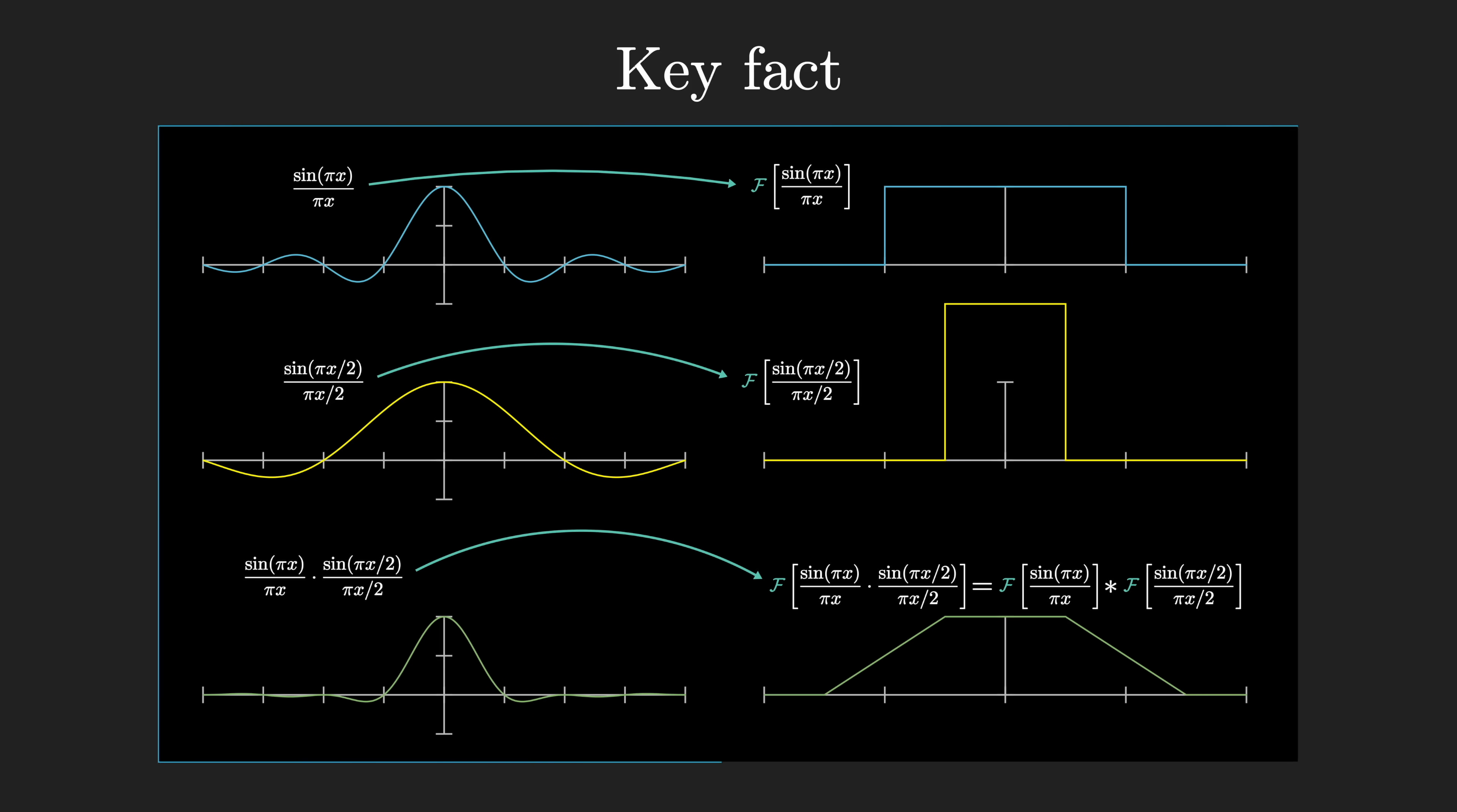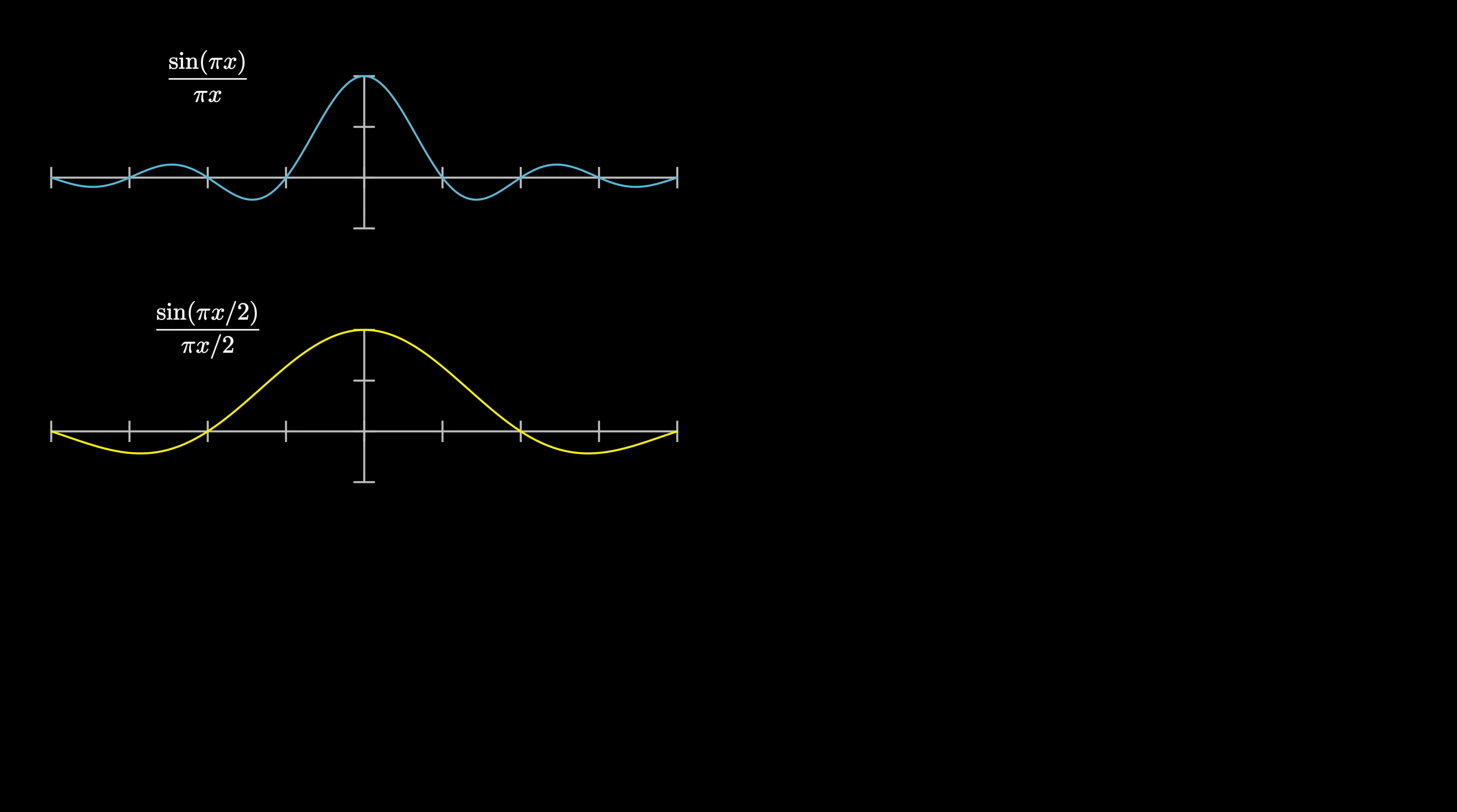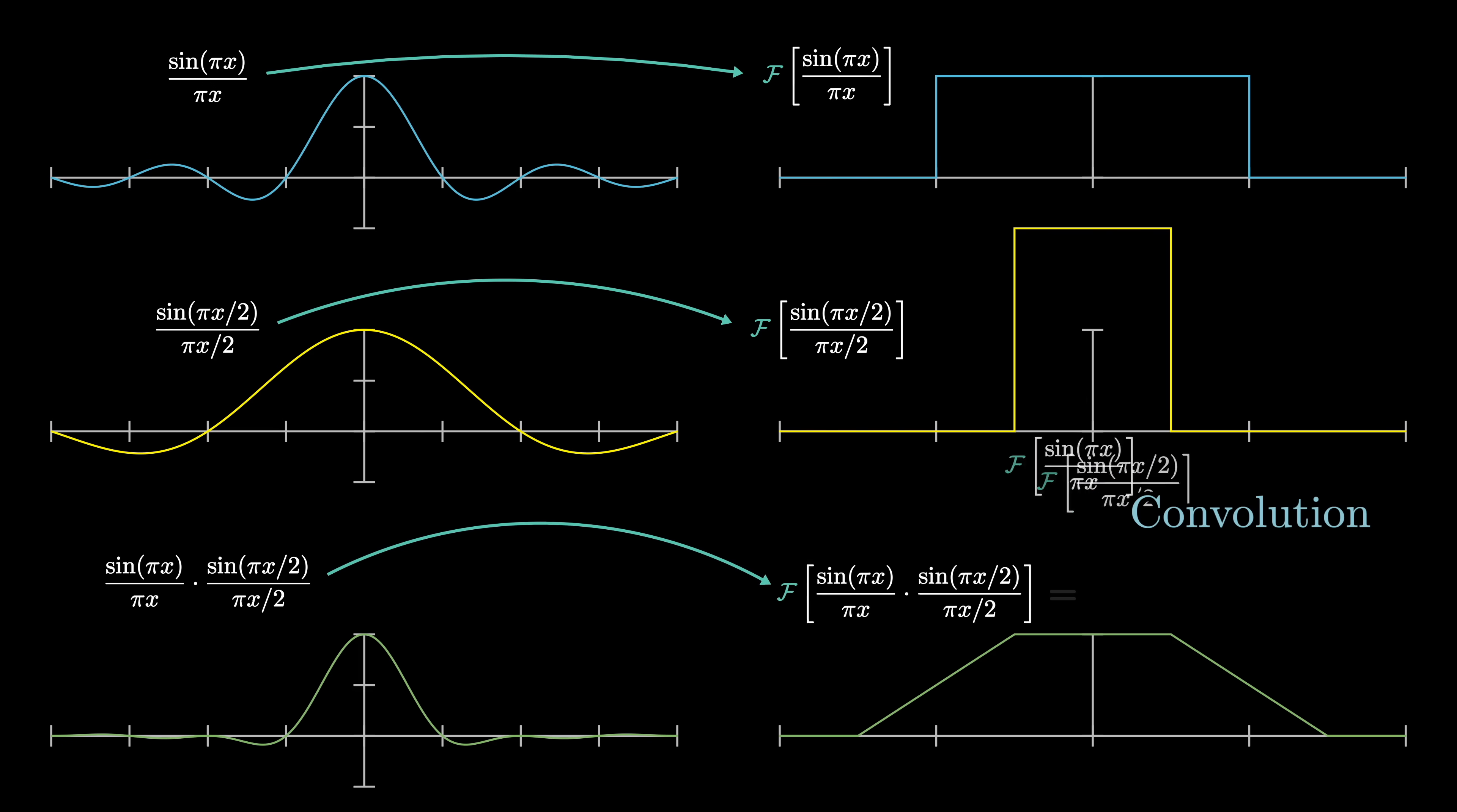Now, the other key fact that will explain the connection we're hunting for is that if you have two different functions and you take their product and then you take the Fourier transform of that product, it will be the same thing as if you individually took the Fourier transforms of your original function and then combine them using a new kind of operation that we'll talk all about in the next video known as a convolution.